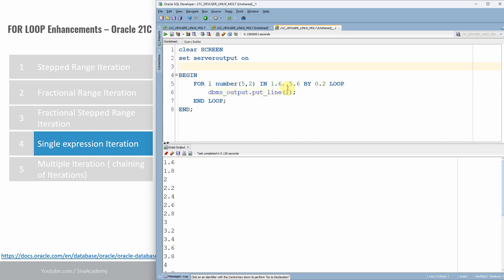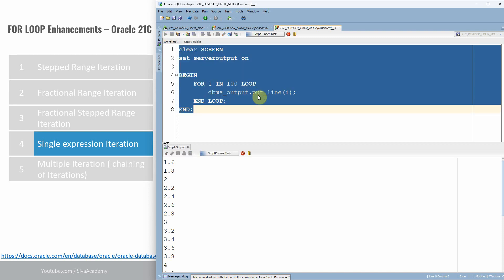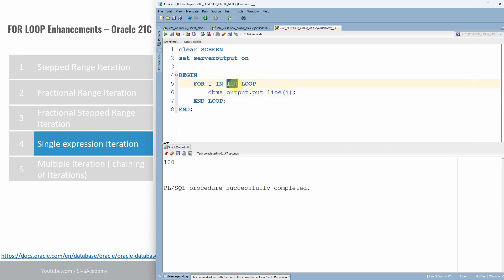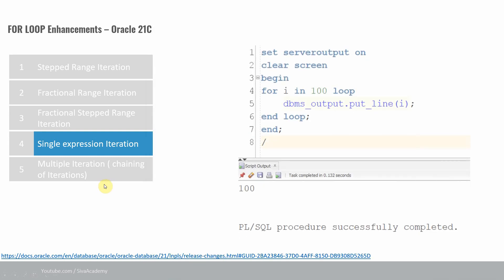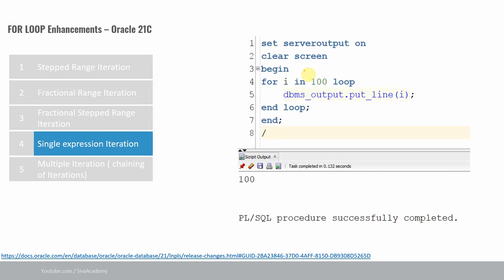Let us move to the next example: single expression iteration. Starting from 21c, if you want to iterate over just one value, you simply specify that value — for example, 100. In this case, the iteration happens just once. You can specify values like 250 or 150 — it will execute only once for that single value. The key learning: just specify the single value for which the iteration should occur.